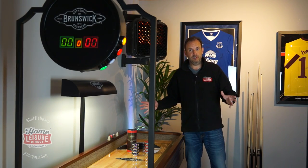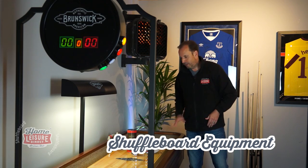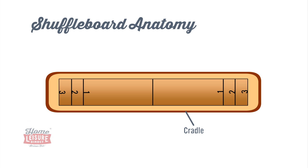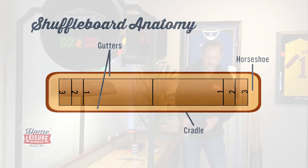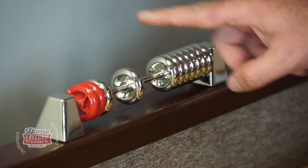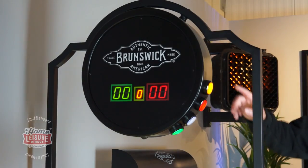Let's take you through the different components of a shuffleboard table. The main part is the board, also known as the plank, made out of hardened maple in a butcher-block style. Then you've got the cradle it sits in, going all around it. The end part is known as the horseshoe. Down the sides of the board you've got what's called a gutter, where pucks will fall if they get knocked off or your aim isn't very good, and there are legs underneath.